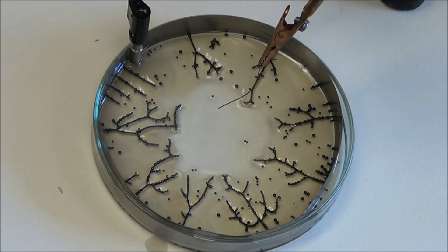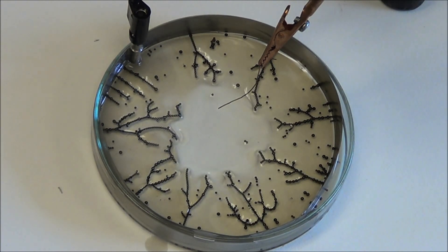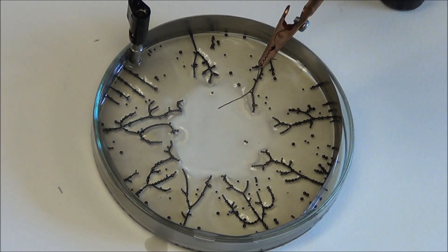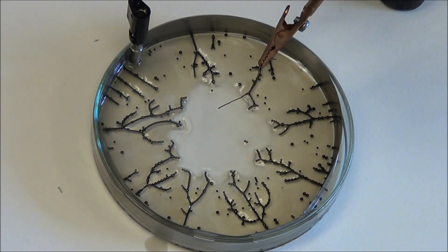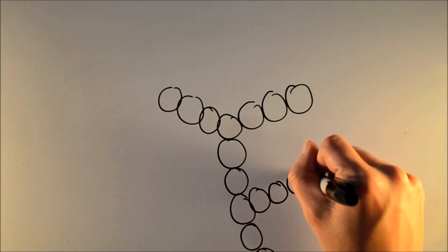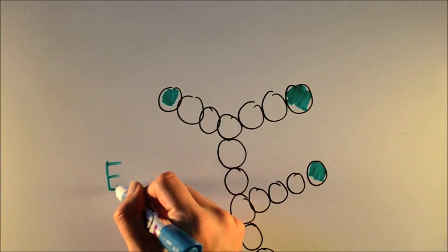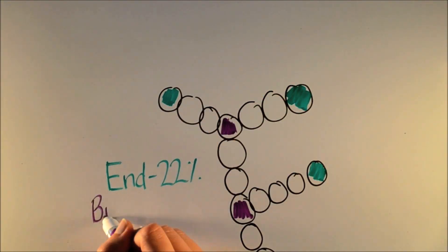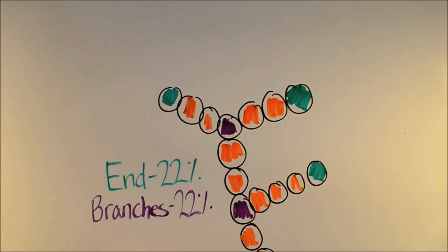It turns out that self-assembling wires have some really cool properties. Some metrics are very predictable, and others are not. For example, whenever you do this experiment, you find that the balls that end the chains make up 22% of the population, balls that are branching points make up 22% of the population, and the rest are connectors. This is always true, even if you change the size of the balls or the number of the balls.